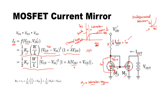Channel length modulation means the drain current IDS should be constant with increasing VDS, but there is a slight rise due to λ. When λ equals zero this term is neglected. Simplifying, for the diode-connected M1 where VDG equals zero: ID = (1/2) · kp · (W/L) · (VGS − VTH)². The output resistance RO has value 1/(ID) · (VE · L / VDS), where VE is a fitting parameter.